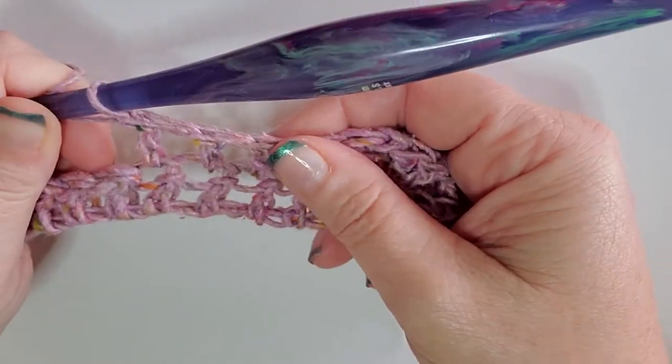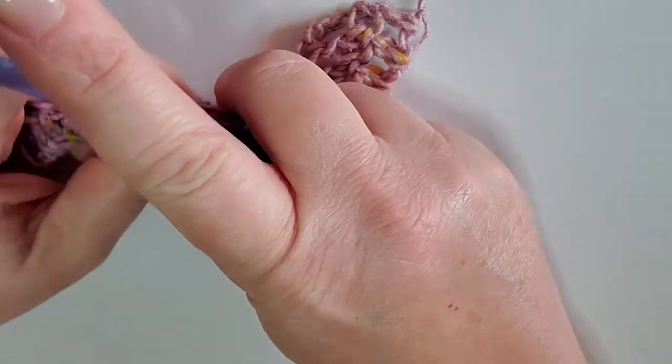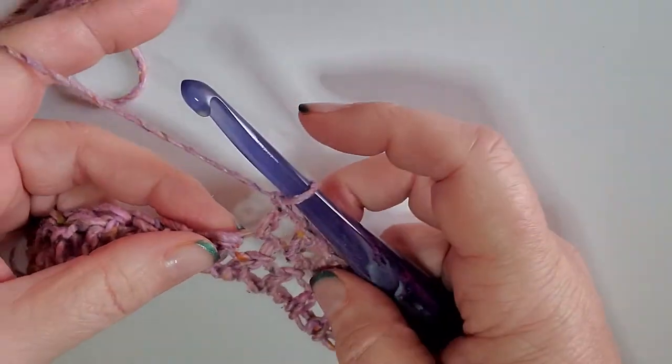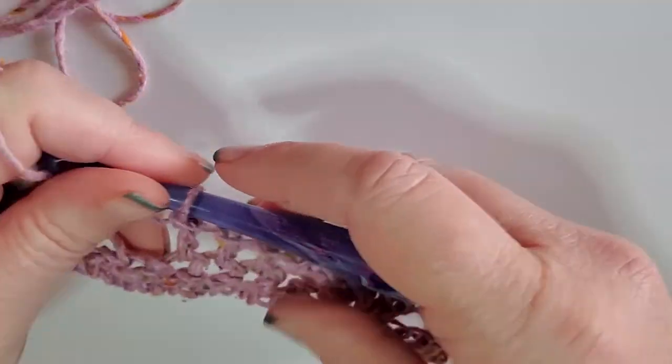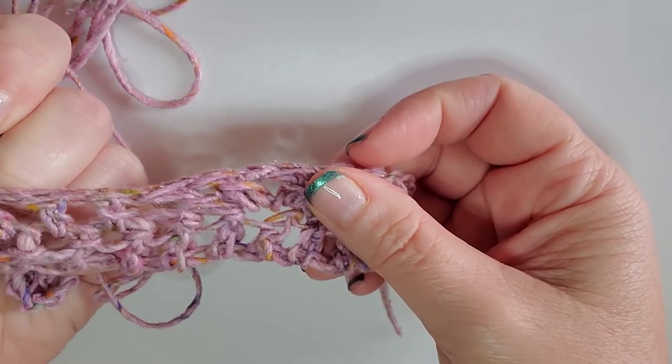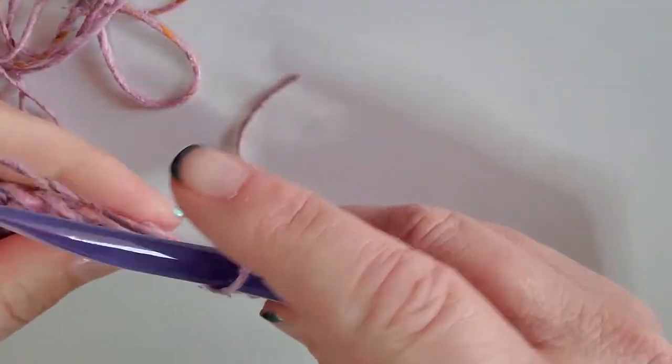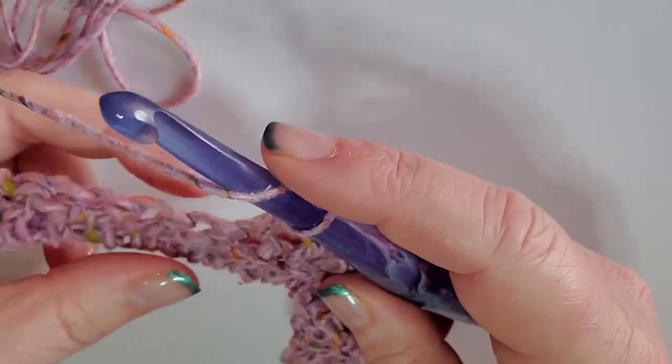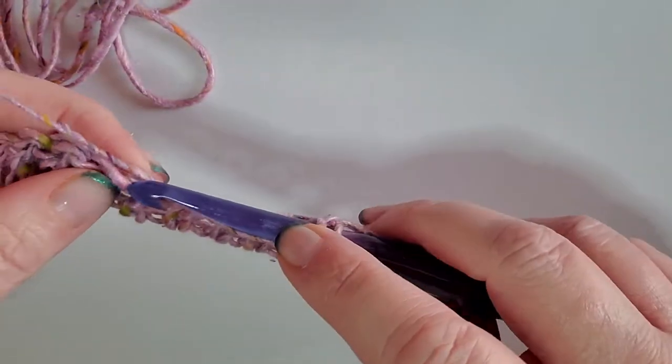We do our pattern, three more double crochets. So basically once you get this first row done, all of the other rows are super easy because if you see a double crochet, you know you have a double crochet, and if you see a shell, then you know you're going to put a shell in there. So we have our three double crochets, we're going to skip two.